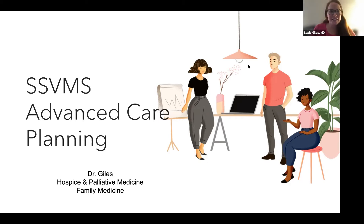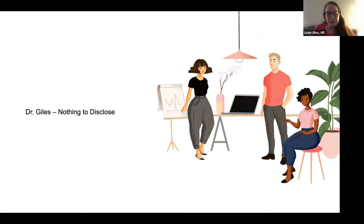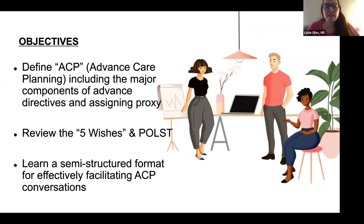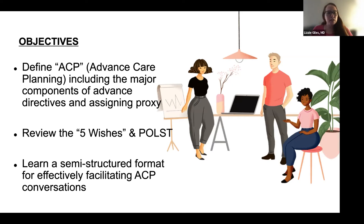Thank you, that was really kind. It's so exciting to be here. So the objectives for my half of the presentation are to define advanced care planning, including the major components: advanced directives and assigning a proxy. I'm going to review the Five Wishes advanced care directive, the POLST form, and introduce a semi-structured format for effectively facilitating advanced care planning conversations.